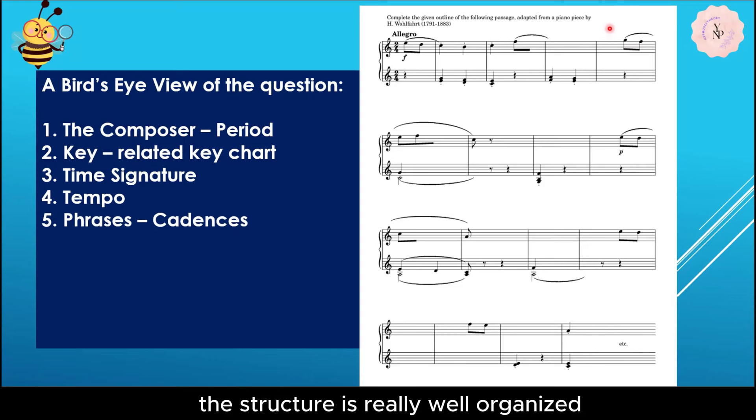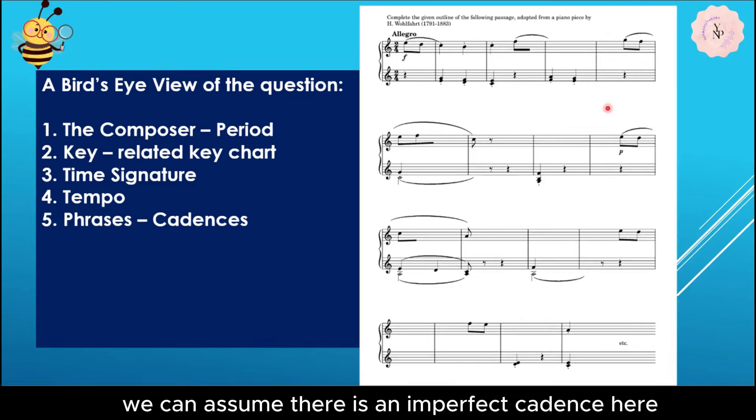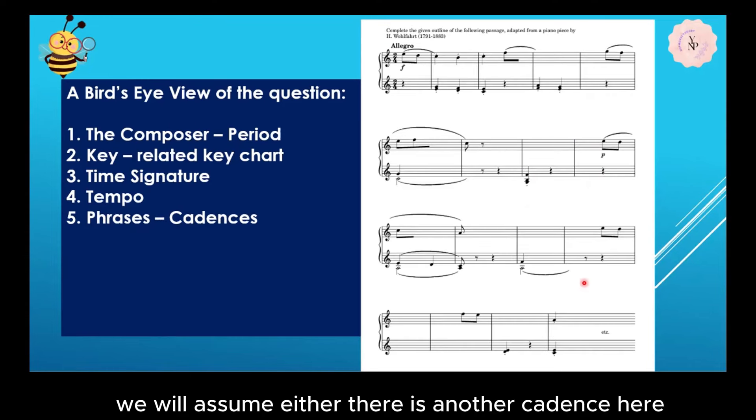Number five, we'll look at the phrases, that means the cadences. Since we understand in Classical period the structure is really well organized, usually with balanced phrases, four bar phrase or eight bar phrase. Now as we look at bar four and bar eight, we can assume there is an imperfect cadence here or a perfect cadence at bar eight, because this chord looks like a five-seven in C major, and five-seven will resolve to one. Then further down we will assume either there is another cadence or we may confirm at the end, sure there will be a cadence.